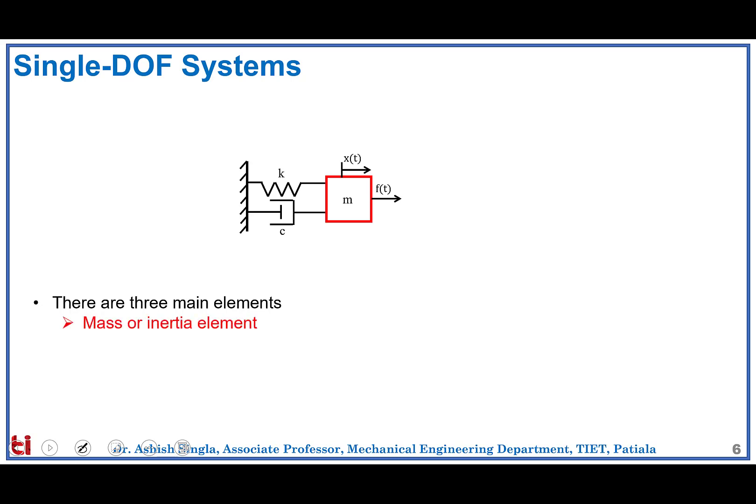The first element is the mass or inertia element, which opposes the translatory motion of the body. The second element is the spring, which is an energy-storing element that stores strain energy due to its deflection. The natural tendency of the spring is to retain its original position, so it opposes displacement. The third element is the damper, which represents energy dissipated by the system due to friction, air drag, or resistance — this is viscous damping, where the damper opposes the velocity of the body.